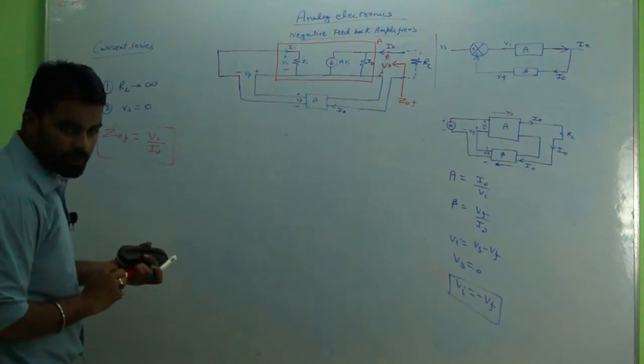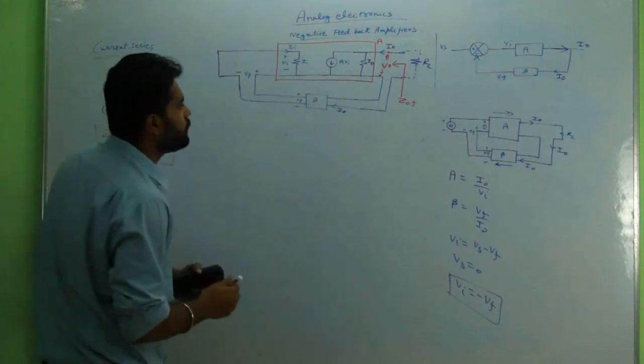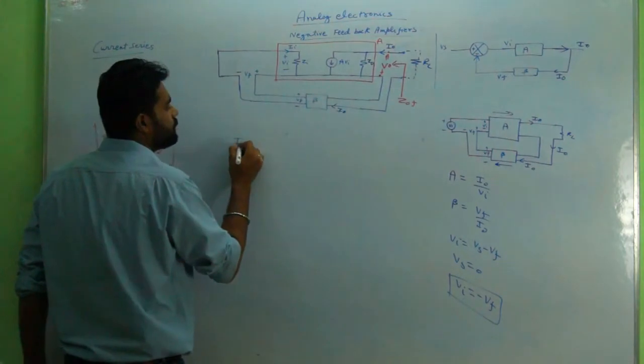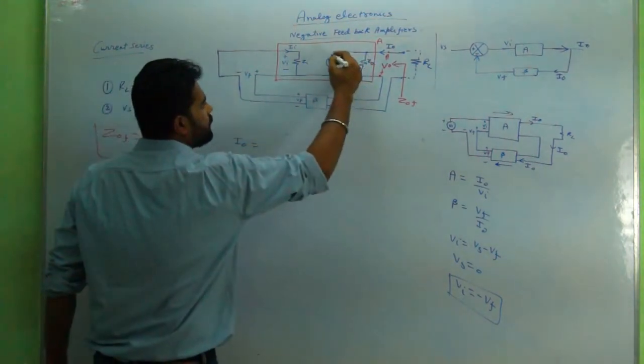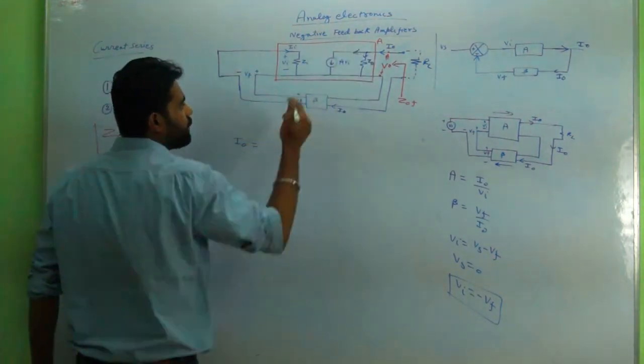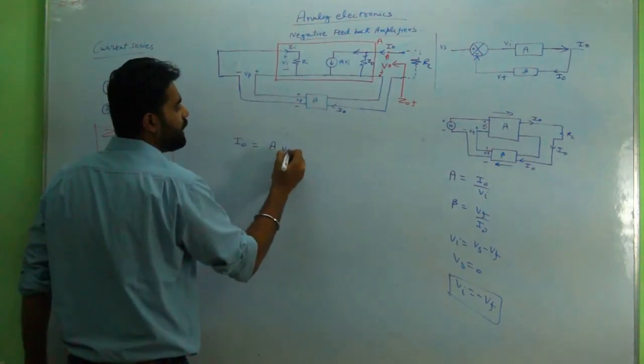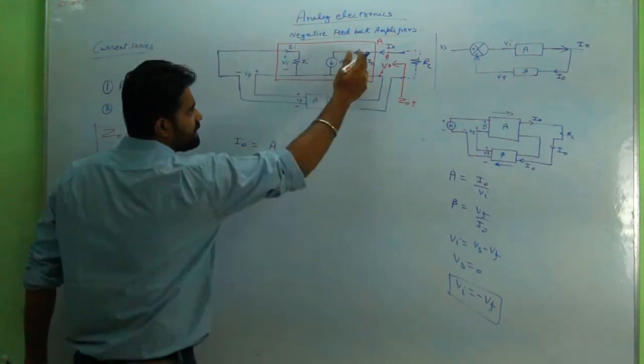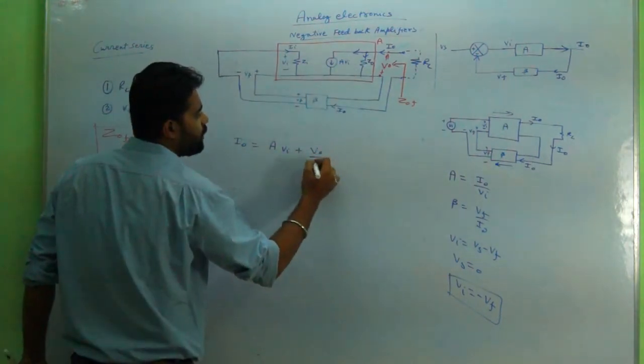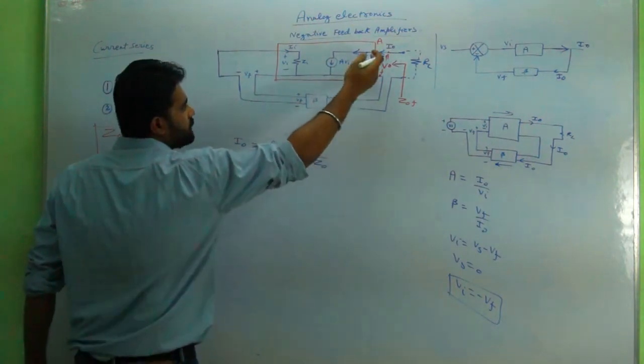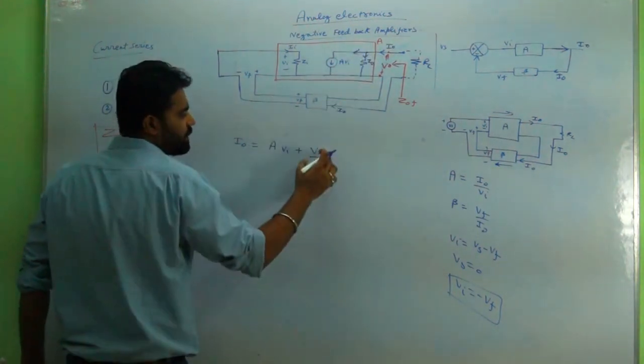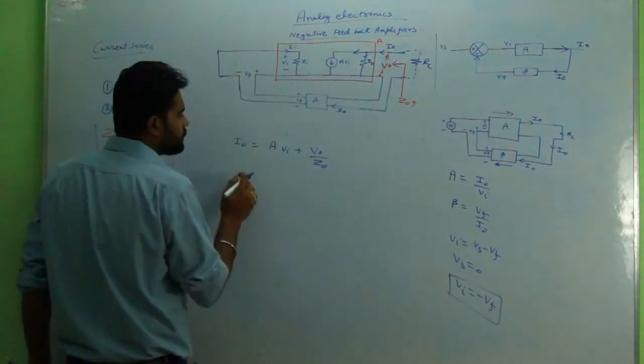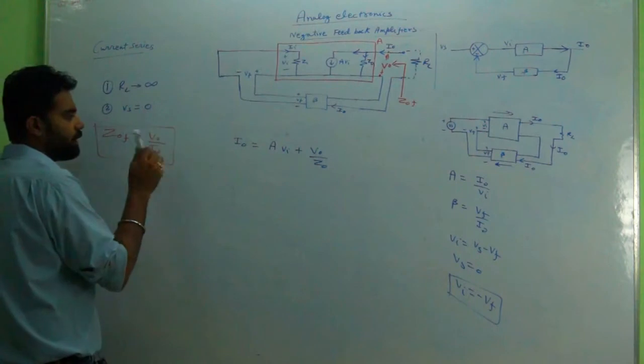We'll start with KCL. i_naught can be written in two parts: this and this part. So i_naught can be written as A into v_i, that is the dependent current source, plus this is Z_naught, so v_naught upon Z_naught. I'll write it as the current. Voltage is there, impedance is there, v_naught upon Z_naught.